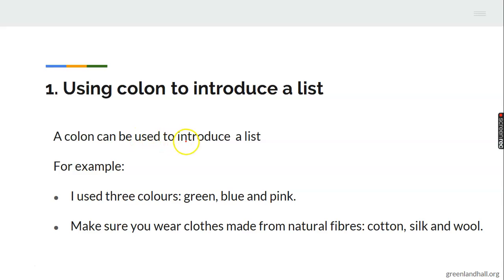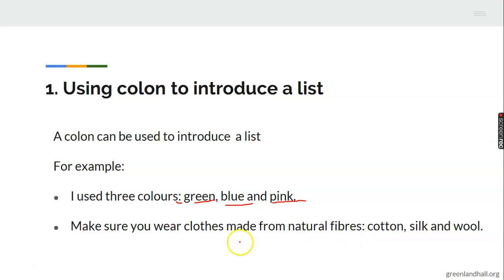A colon can be used to introduce a list. For example: 'I used three colors: green, blue and pink.' You cannot ignore the use of the colon right here — it just has to be there. Look at another example: 'Make sure you wear clothes made from natural fibers: cotton, silk and wool.' You can see the colon introducing a list. That's the first use of the colon.